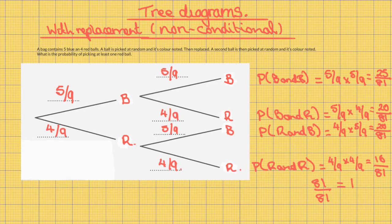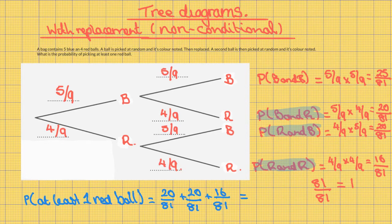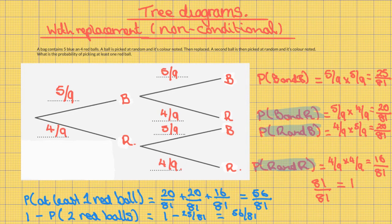Now you can answer the question: what is the probability of picking at least one red ball? The probability of blue and red has one red ball; the probability of red and blue has one red ball; the probability of red and red has one red ball. So the probability of at least one red ball is 20 out of 81 plus 20 out of 81 plus 16 out of 81, which is 56 out of 81.